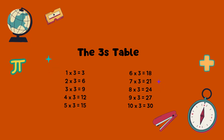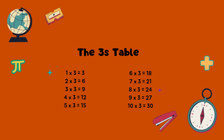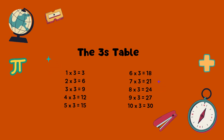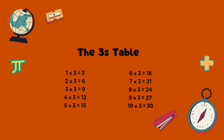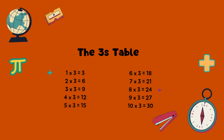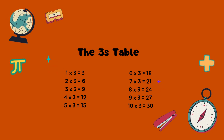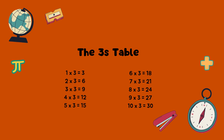4 times 3 equals 12. 5 times 3 equals 15. 6 times 3 equals 18. 7 times 3 equals 21. 8 times 3 equals 24. 9 times 3 equals 27. 10 times 3 equals 30.